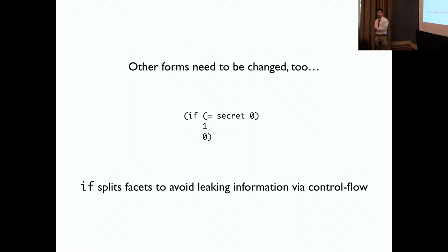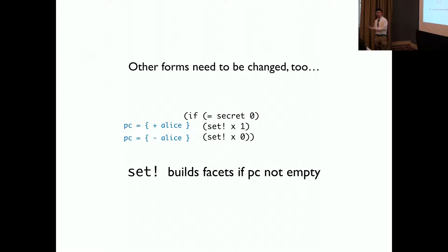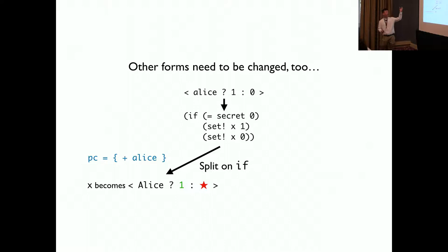Other forms need to be changed, too. It splits facets to avoid leaking information via control flow. And the set bang builds facets if the PC, the program counter, is not empty.